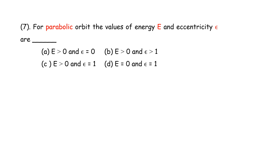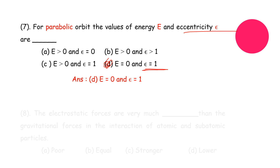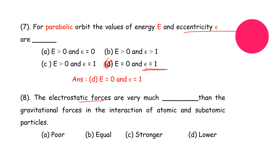For a parabolic orbit, what are the values of energy E and eccentricity epsilon? The correct answer is provided for the parabolic orbit case.